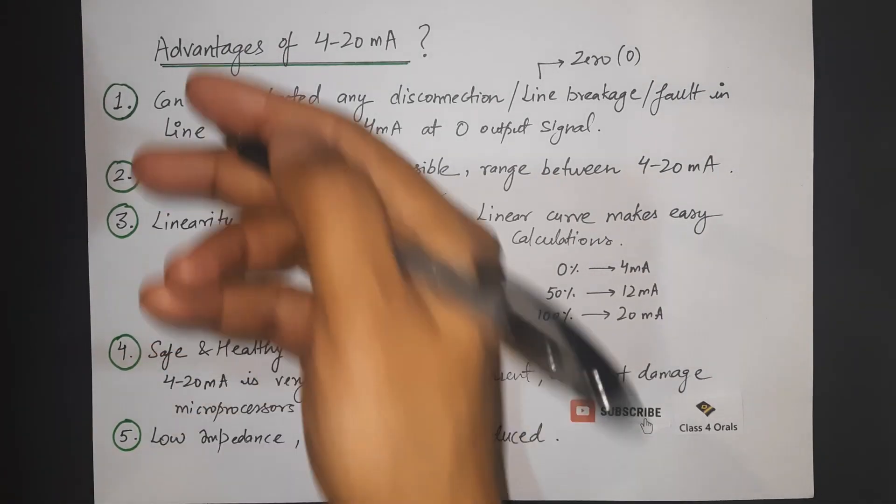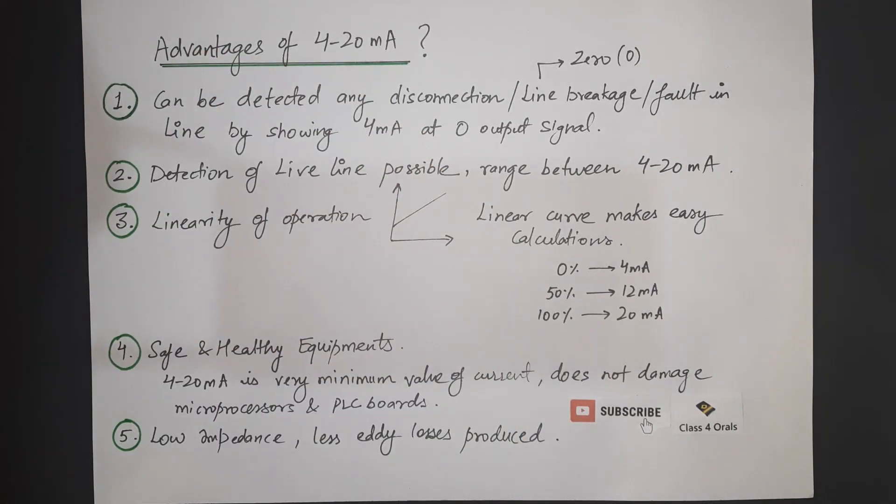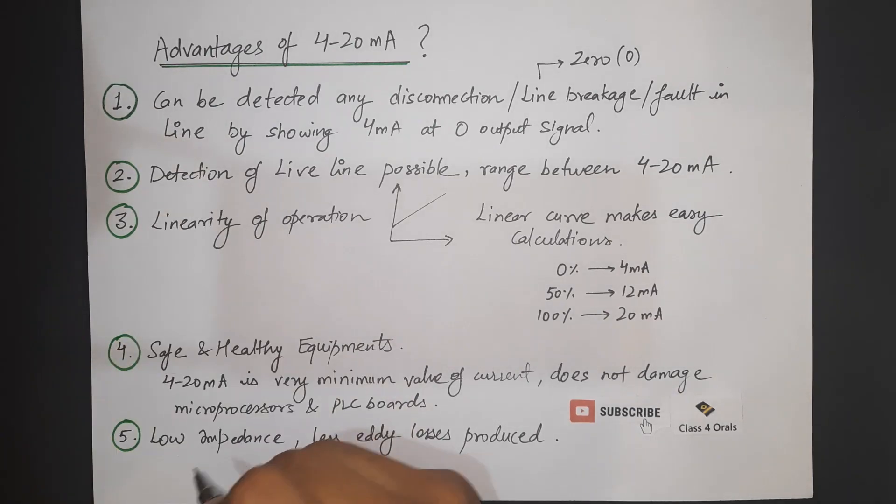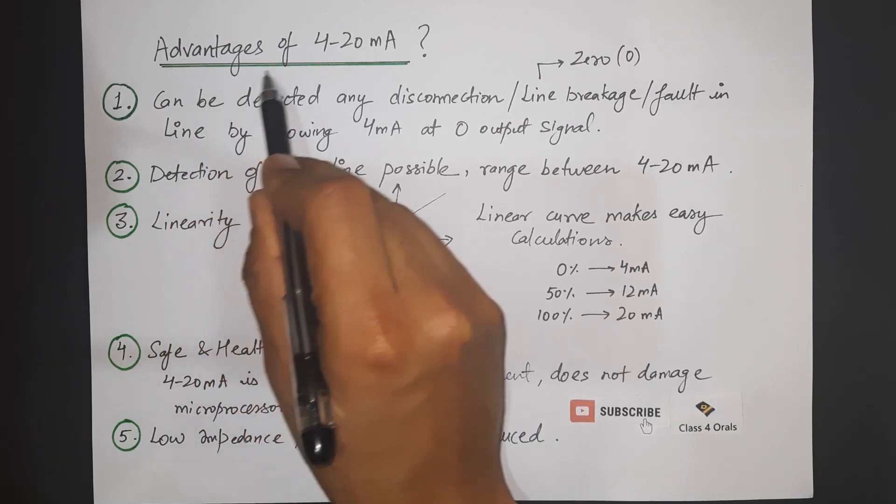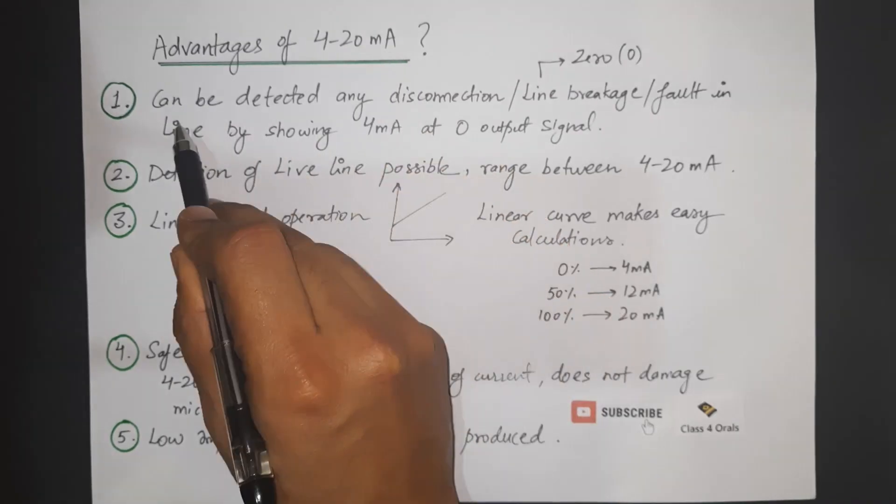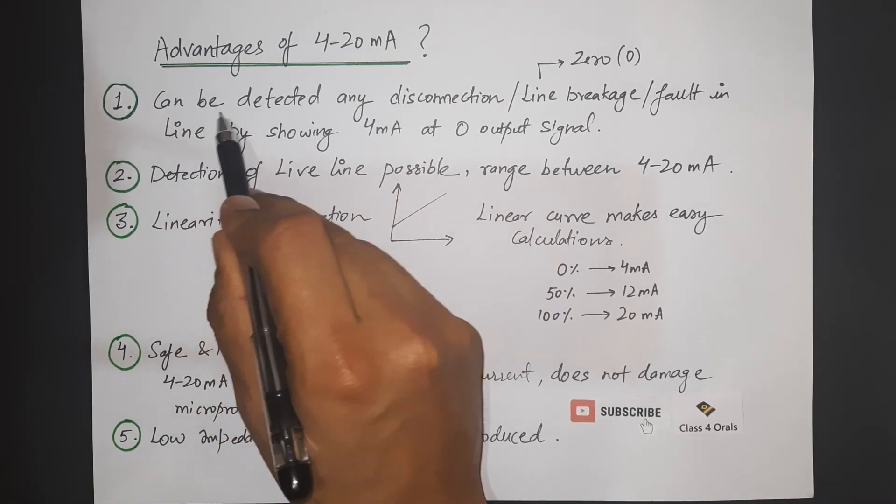The last question is that what are the advantages of the 4 to 20 mA. So the first reason is as we have just discussed the 4 to 20 mA by this we can detect any kind of disconnection or line breakage or fault in the line